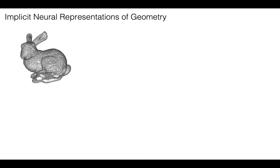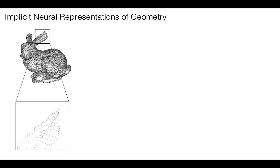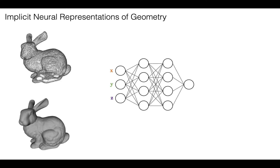Traditionally, 3D objects are represented with discrete structures such as point clouds, which are a list of scene properties at a sparse set of points in space. In contrast, emerging implicit neural representations instead model an object as a function that maps 3D coordinates to scene properties.